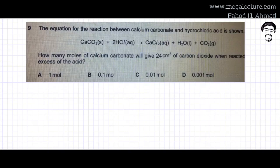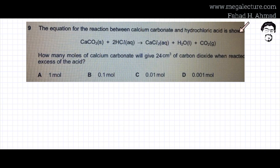The equation for the reaction between calcium carbonate and hydrochloric acid is shown. Calcium carbonate reacts with HCl, producing calcium chloride, water, and carbon dioxide. The reaction and mole ratio are given. The question asks: how many moles of calcium carbonate will give 24 cm³ of carbon dioxide when reacted with an excess of acid?